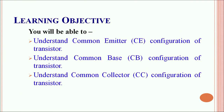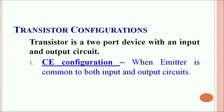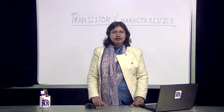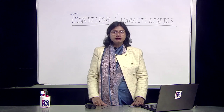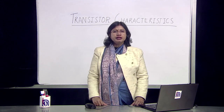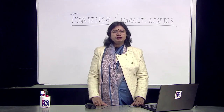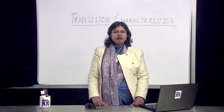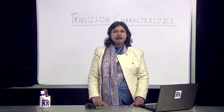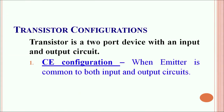As you are aware, the transistor is a two-port device with an input and an output circuit. In the common emitter configuration, the emitter is common to both the input and the output regions. In a transistor there are three regions — whether you take an NPN transistor or a PNP transistor, the emitter and the collector are of the same type and the base is of a different kind of doping. In the common emitter configuration, the emitter is common to both the input and the output circuit.